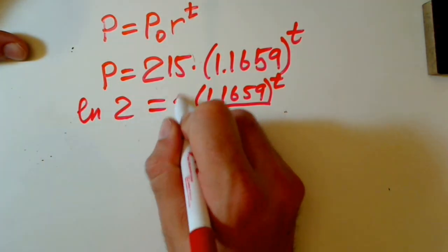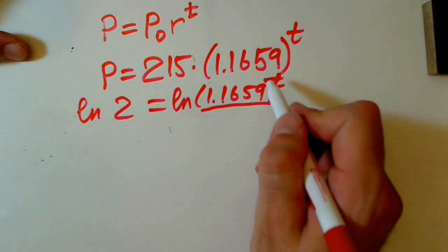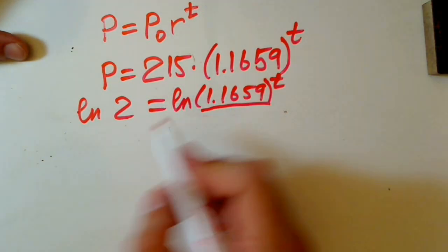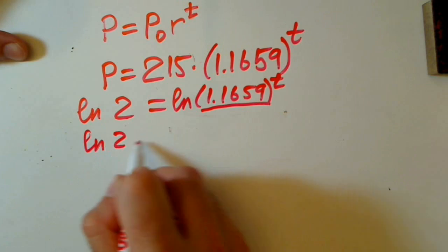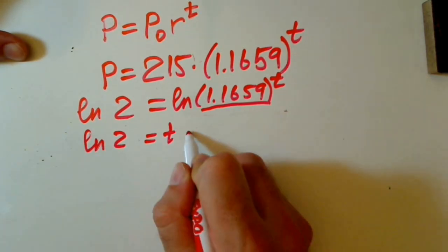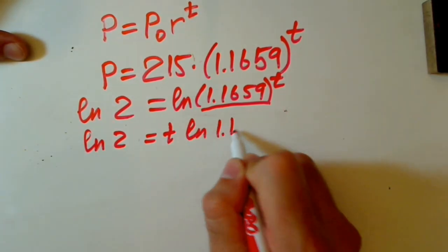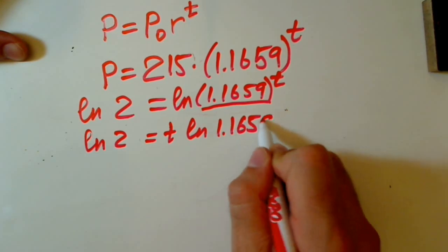And remember, T goes up front. We can rewrite this. So, we have to find ln 2 equals T times natural log 1.1659.